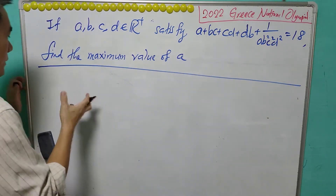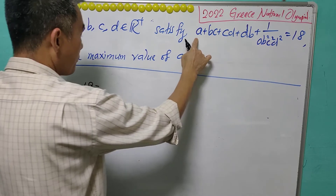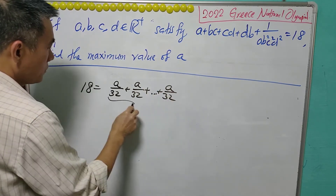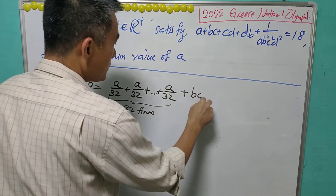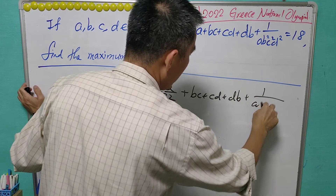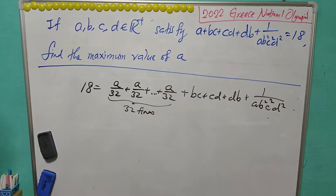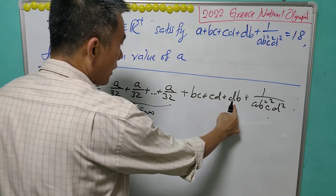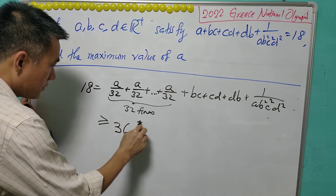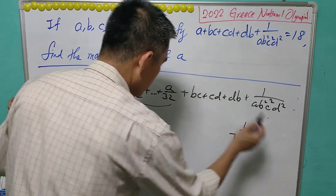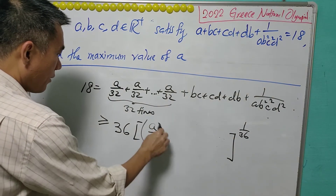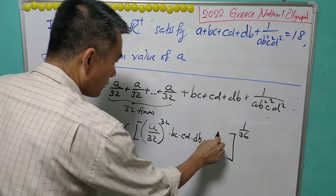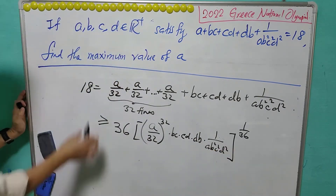Using this equation, we know that 18 equals the given expression. For A, we write it as A over 32 repeated 32 times, and copy down the remaining terms B, C, D, D, B, 1 over A, B squared, C squared, D squared. Using AM-GM inequality on all 36 terms, 18 is greater than or equal to 36 times the product to the power of 1 over 36. The product is (A over 32) to the power of 32 times B times C times C times D times D times B times 1 over AB squared C squared D squared, and this equals 18.